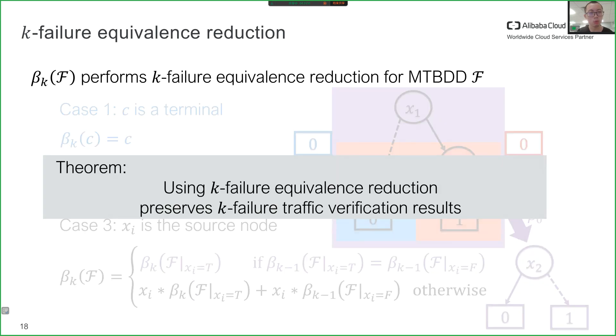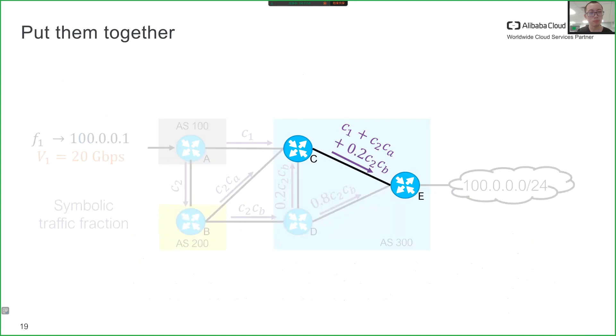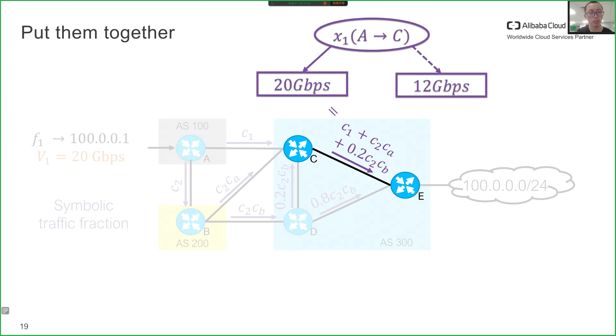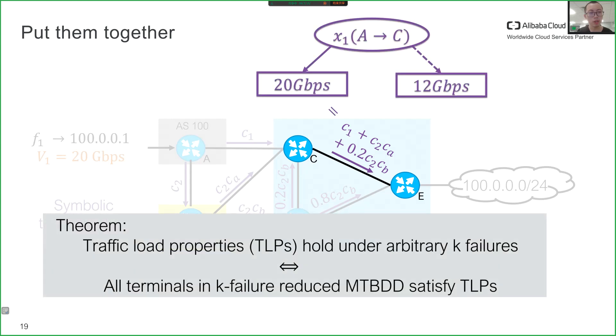In our paper, we formally prove that using k failure equivalence reduction preserves k failure traffic verification results. Put all the above together, we can compute the symbolic traffic load of link C to E under one failure scenario. Finally, verifying traffic load properties can be done as simply as examining whether all terminals in the k failure reduced MTBDD satisfy these properties, as shown in the theorem with detailed proofs in our paper.